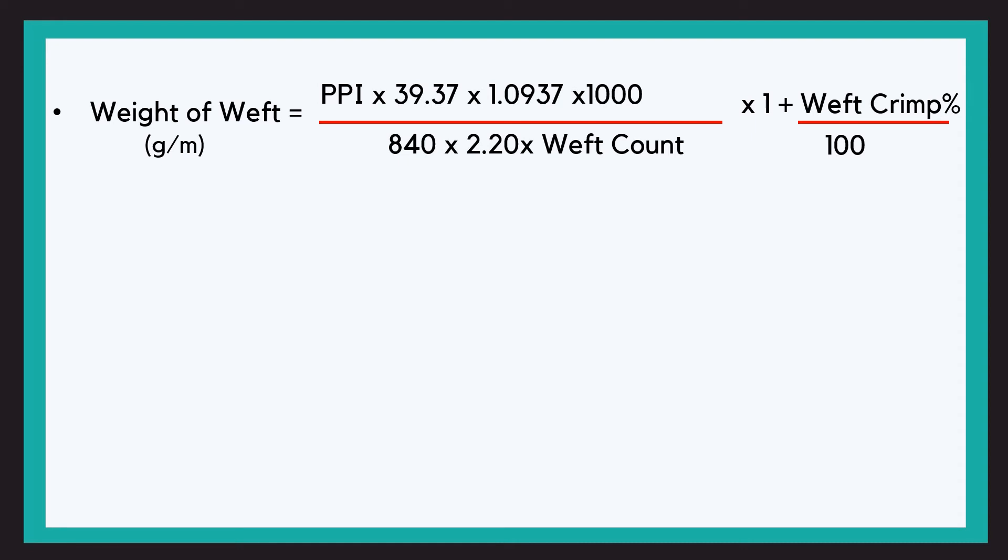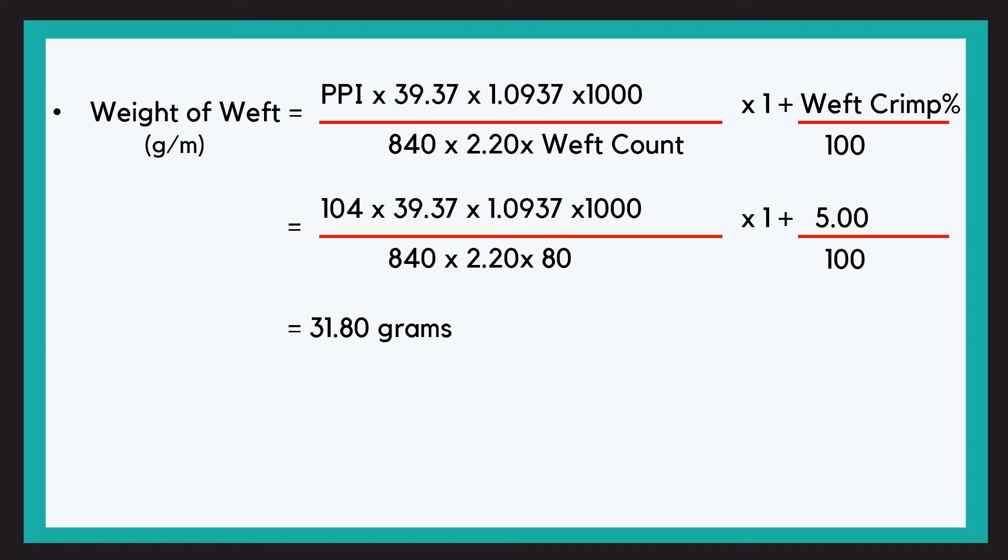We will calculate the weight of weft. We know the formula. Let us substitute the values: PPI is 104 × 39.37 × 1.0937 × 1000 divided by 840 × 2.20 × 80 × (1 + 5 by 100), so this is 1.05. This is how we solve it. It comes to 31.80 grams. Weight of weft in one meter is 31.80 grams.